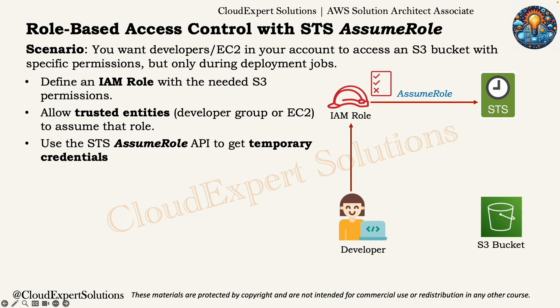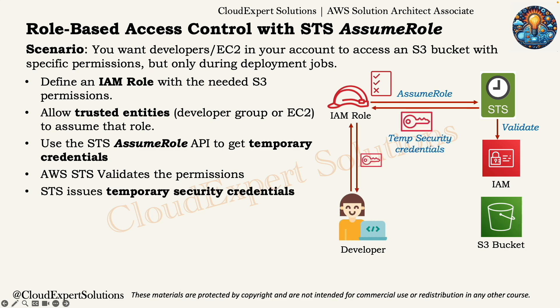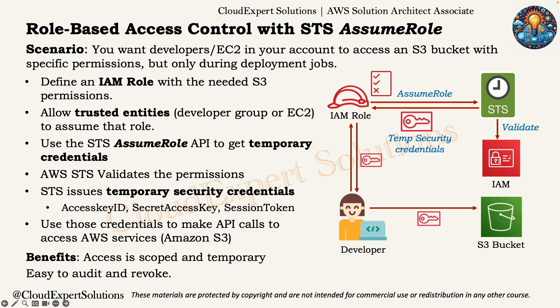You can set the session duration between 15 minutes and 12 hours. AWS STS invokes IAM to validate the permissions, and after validation, issues temporary security credentials that include an access key ID, secret access key, and session token. Using those credentials, the user can make API calls to AWS services — in our case, the S3 bucket — and perform the required operations. The real-world benefits are that access is scoped and temporary, easy to audit and revoke, and you don't have to create, share, or store long-term credentials like IAM access key IDs or secret access keys.